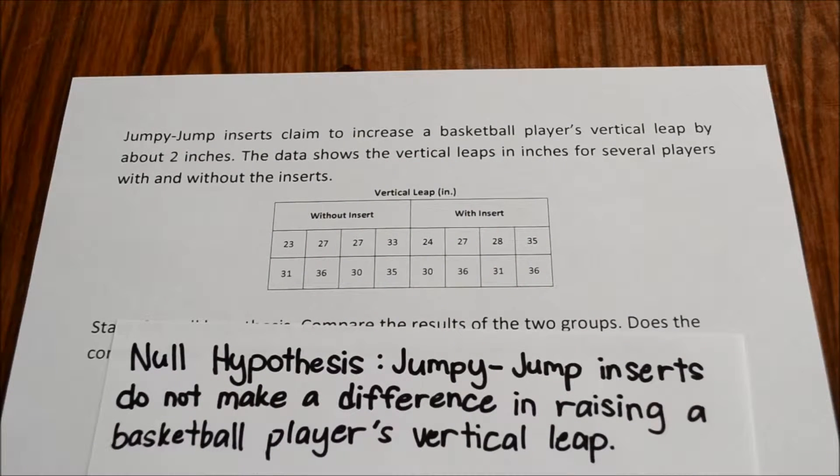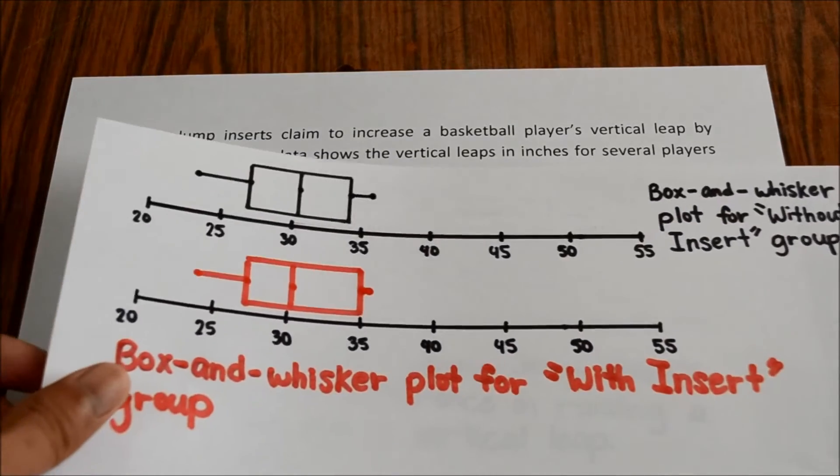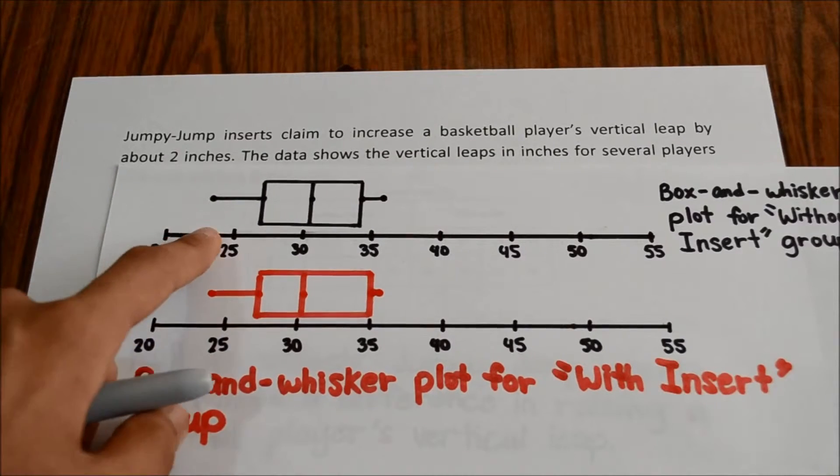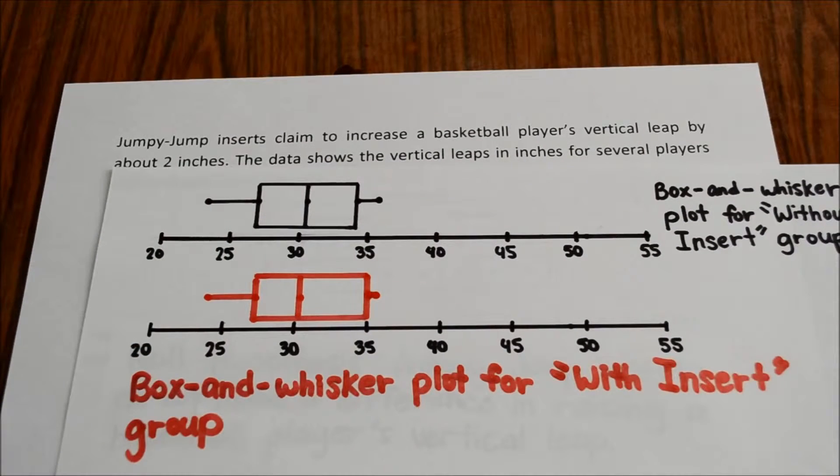Then to compare the results of these two groups I have made two box and whisker plots with each plot for each group. So this is the box and whisker plot for the without insert group and the another for the with insert group. And then we can compare.